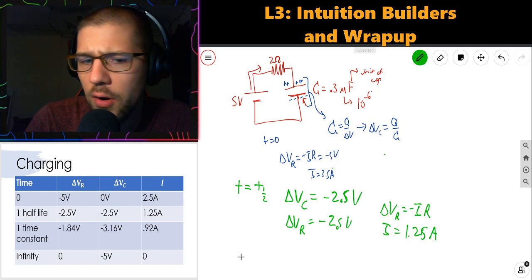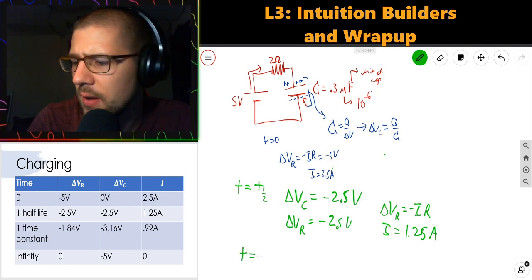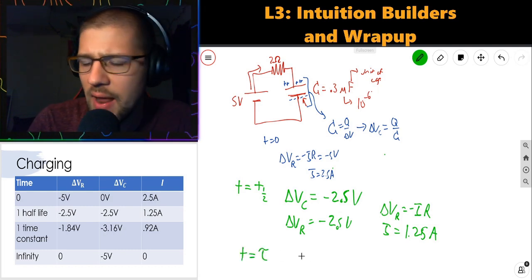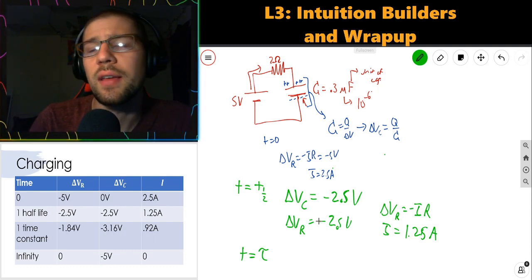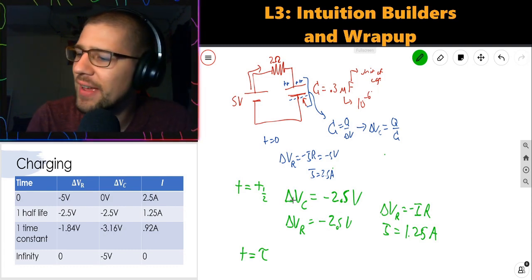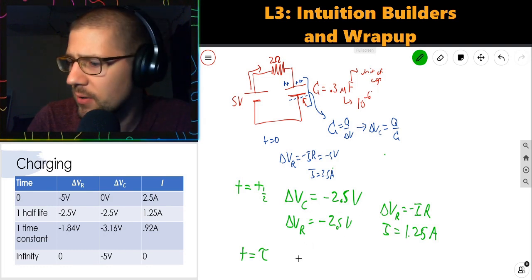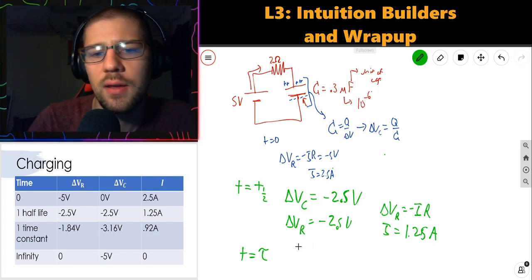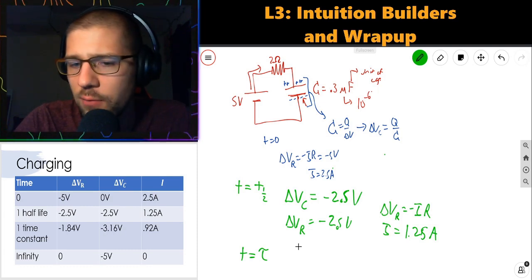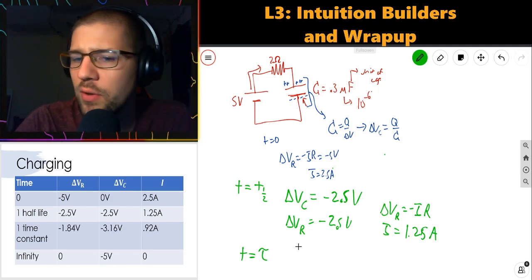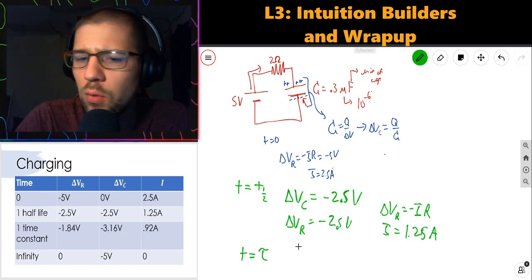If we dial time forward a little longer to one time constant, T equals tau, now the capacitor is like 65-ish percent of the way to completion. So the capacitor is at 3.16 volts. The resistor eats the remainder of that, 1.84 volts. And that makes the current a little bit smaller now, 0.92 amps.